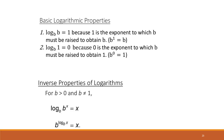Some basic properties of logarithms: log base b of b equals 1, and log base b of 1 equals 0, based on the exponential rules. Also, the inverse property: if we take b to the log base b of x, this cancels out and we're left with just x.